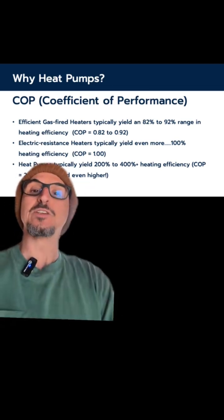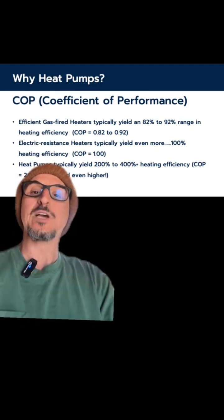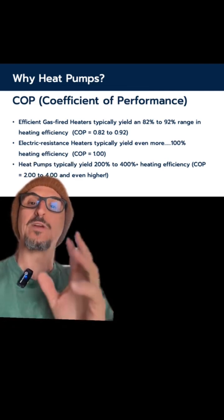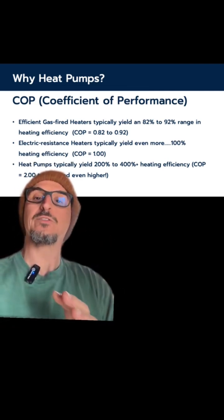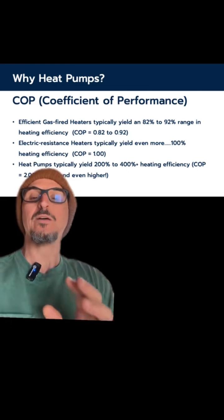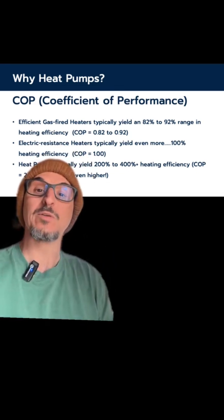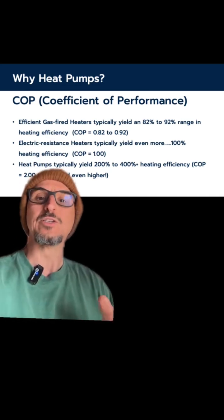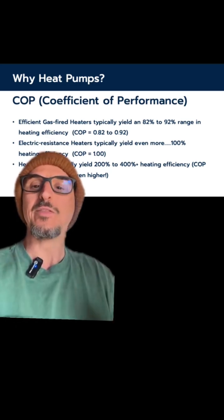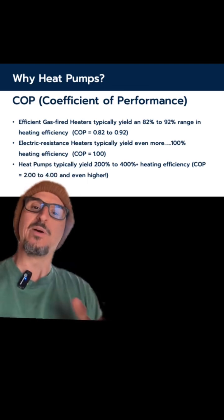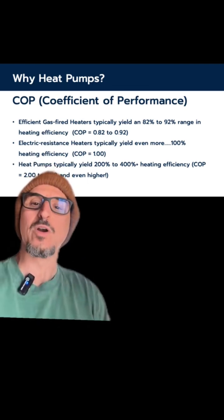Here are some typical coefficient of performances for different types of systems. For gas fired heaters, you're typically under one COP. For electric resistant heat, it's one COP — a one to one ratio. And for heat pumps, you're usually in a two to four COP, meaning 200 to 400 times the power output than input.